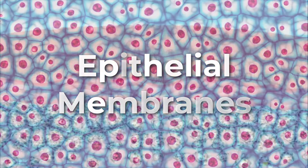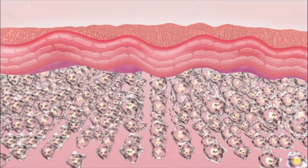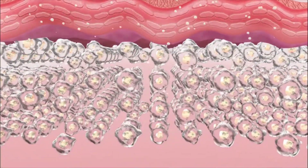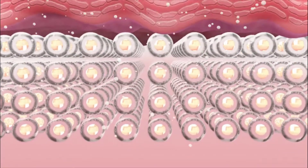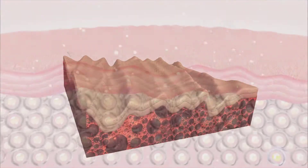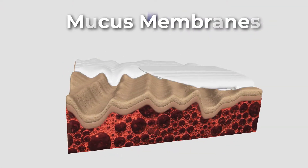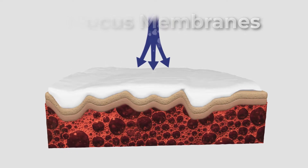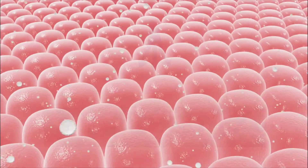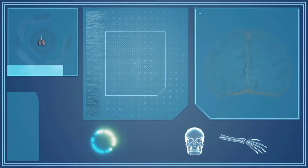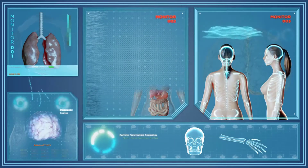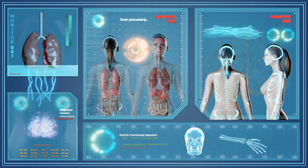The epithelial membrane is composed of epithelium attached to a layer of connective tissue. The mucous membrane is also a composite of connective and epithelial tissues. Sometimes called a mucosa, these epithelial membranes line the body cavities and hollow passageways that open up to the external environment, including the digestive, respiratory, excretory, and reproductive tracts.